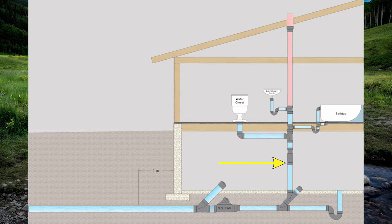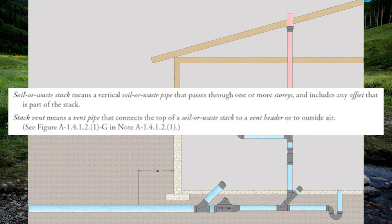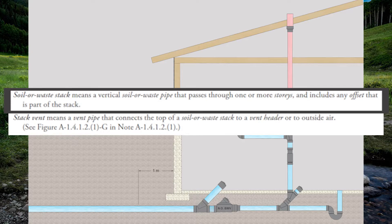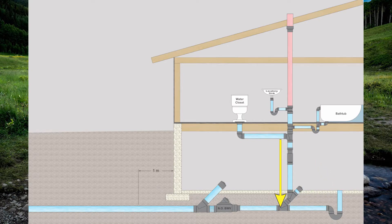Now let's head back to that main stack. Main stack is a trade name — its official name is a soil or waste stack, which I just call a sow stack. The code definition: soil or waste stack means a vertical soil or waste pipe that passes through one or more stories and includes any offset that is part of the stack. A soil or waste pipe is a sewage pipe. So our lab sink upstairs drains into the stack, goes all the way down through one story, and drains into the building drain — making this a soil or waste stack.